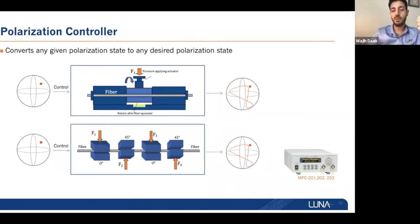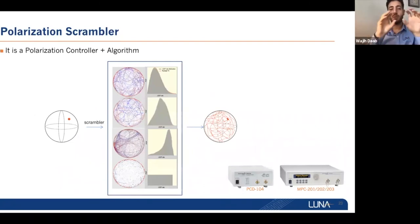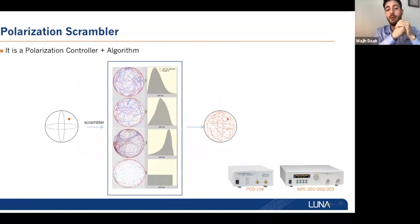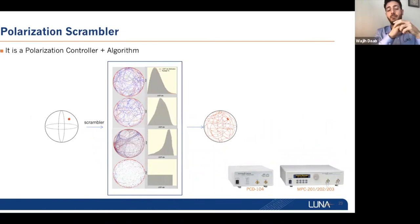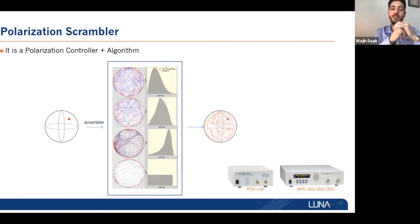We have manual polarization controllers and electrically driven polarization controllers, with up to six channels per device. A common question is whether a polarization controller and polarization scrambler are the same product — they are not, because each is designed for a specific application. However, a polarization scrambler is essentially a polarization controller plus an algorithm. If you develop your algorithm to cover the Poincaré sphere evenly and quickly, you can achieve the scrambling you need.